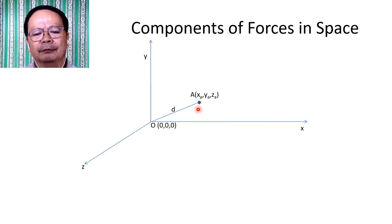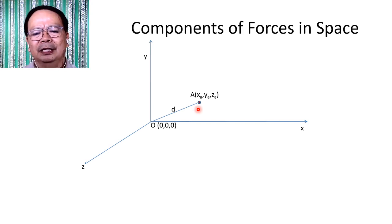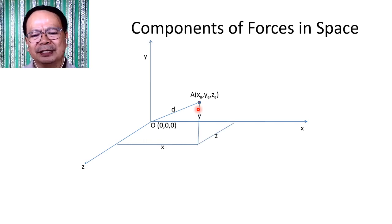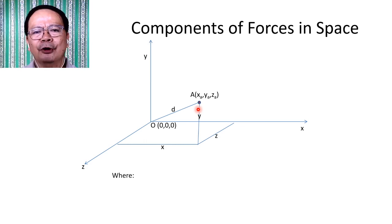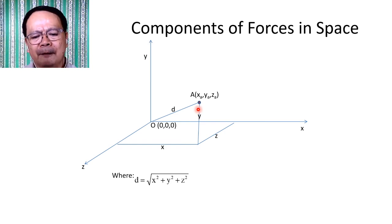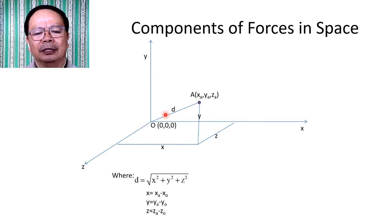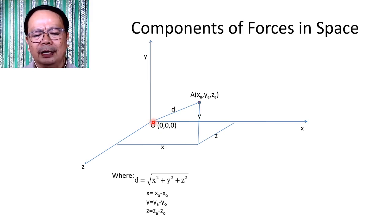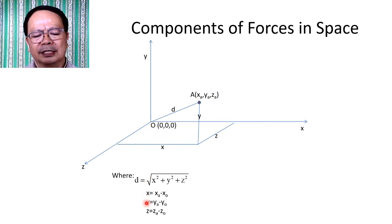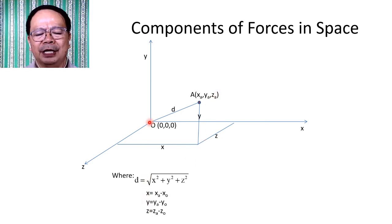The distance between the two points can be computed in terms of the component of each distance in the X direction, the Y direction, and the Z direction. The value of the distance D shall be equal to the square root of X² + Y² + Z², where X = X_A − X_0, Y = Y_A − Y_0, and Z = Z_A − Z_0.